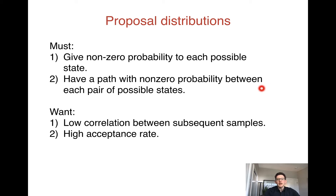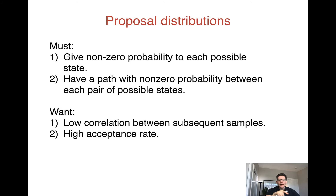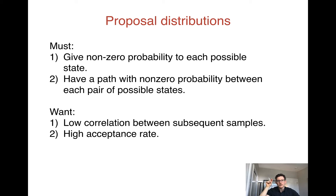More generally, there must be a path in the state space — that is, among all the possible values of x — such that between every pair of x's with non-zero probability according to the true distribution, there must be some path of proposals, each with non-zero probability, that connect the two. MCMC is going to explore the space by sampling different x's, and from every possible value with non-zero probability, it has to be able to reach every other such value.